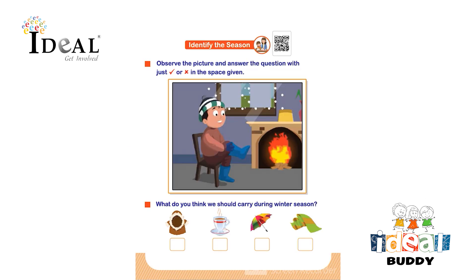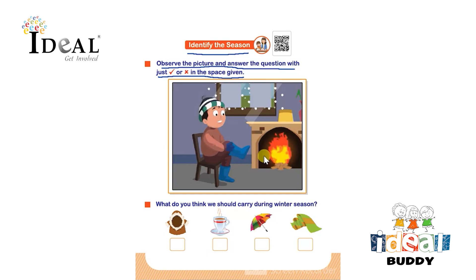Hello everyone. In this page the topic is identify the season. Here the child has to observe the picture and answer the question with a tick mark or a cross mark in the space given. There is a picture of a child getting some heat, and we can see it is winter season as the child has worn a woolen cap, a jacket, and socks.